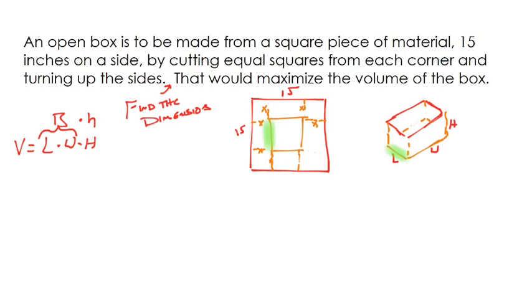And so what you got to think of is we cut out from this full length of 15, we cut out that part and we cut out that part. Well if that has a length of x and that has a length of x then this entire distance, excuse me this entire distance right here would be 15 minus 2x.